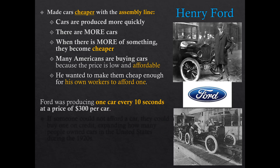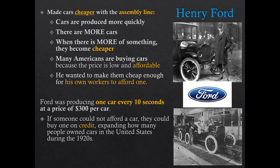Ford wanted to make sure the people who worked for him made enough money to afford the car, and that the car was cheap enough for them to afford. In the 1920s, a Model T was being created basically every 10 seconds at a price of $300. If you couldn't afford that upfront, another new innovation called credit - buy now, pay later - allowed so many people to buy Model T cars. This is one of the innovations that revolutionized America during the 1920s, largely due to the return to laissez-faire economics and normalcy under President Harding.